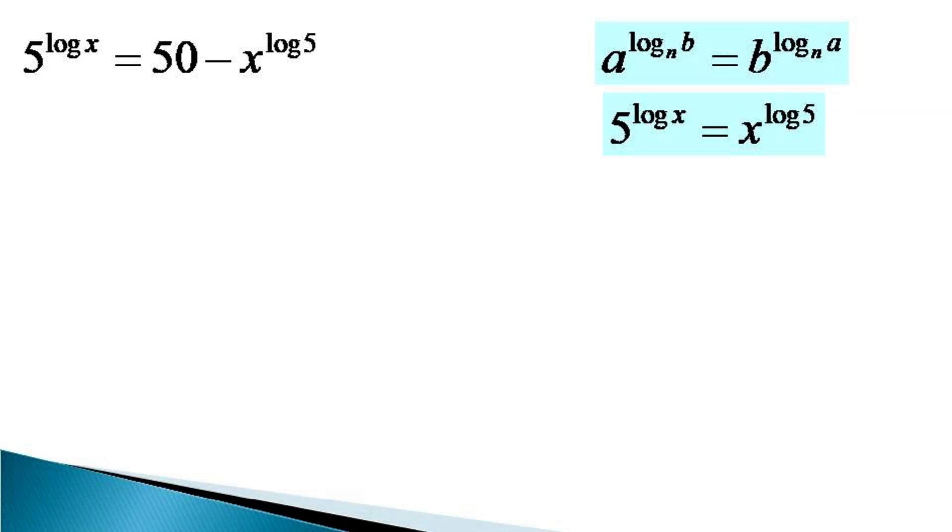we replace x raised to the power log 5 by 5 raised to the power log x, and the equivalent equation becomes 5 raised to the power log x equals 50 minus 5 raised to the power log x. Bringing 5 raised to the power log x to the left hand side,